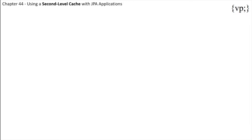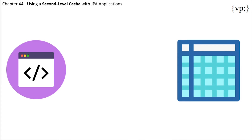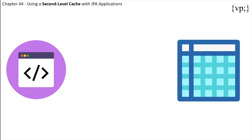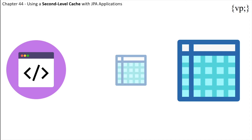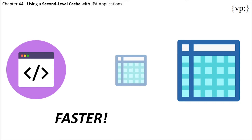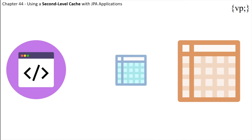When calling entity data, it can be expensive to call it from the database every single time you want to retrieve data. In the name of performance, you can make it an option to store the entity you are calling the most in your cache, making the speed of calling the data much faster by keeping the entity data local and avoiding expensive database calls.